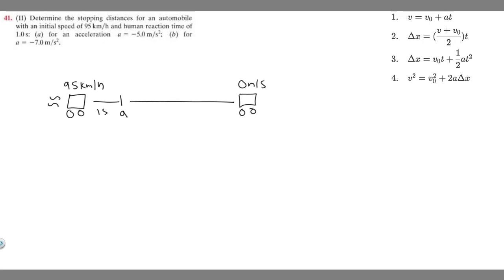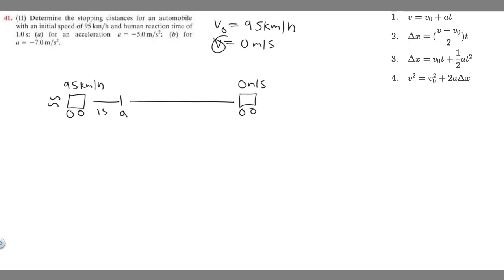Let's identify each variable based on the kinematic equations. V₀, the initial velocity, is 95 kilometers per hour as given. The final velocity V is 0 because we're asking when it stops — at the end it will be stopped at 0 m/s. Time is 1 second for the reaction phase.